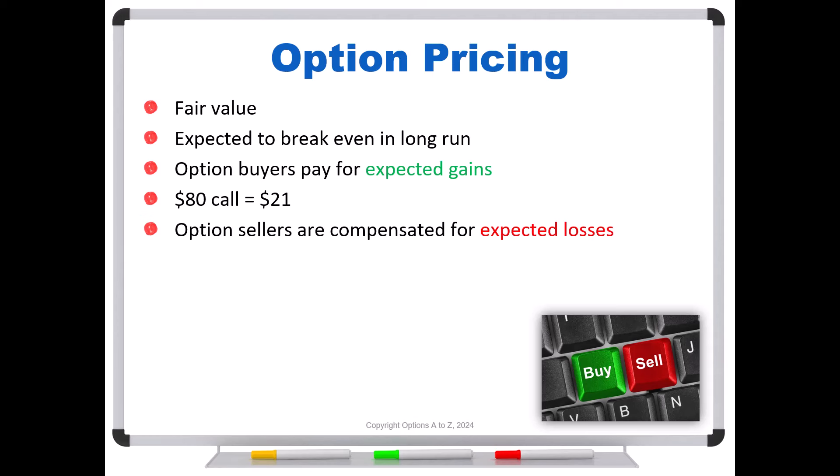On the other hand, option sellers are compensated for the expected losses. That's why you receive the premium when you're an option seller. So for all of you who like to sell naked puts because you think it's free money, think again. If you sell the $95 put for $5, even though it might be five points out of the money, it looks like it's easy money. But the reason you're collecting $5 up front is mathematically, that's what you're expected to lose.